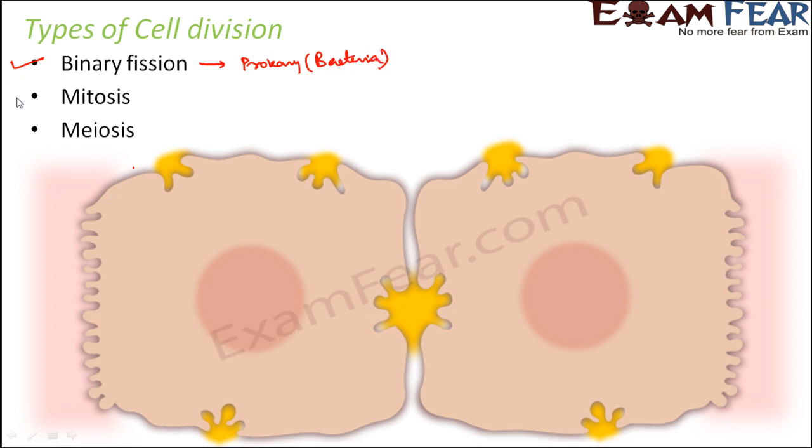When you talk about eukaryotes, there are two modes of cell division. One is mitosis and the other is meiosis. So both of these types of cell divisions are seen in eukaryotes.